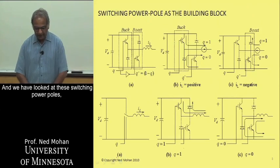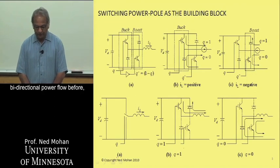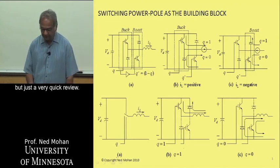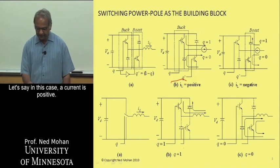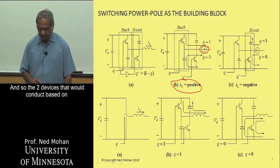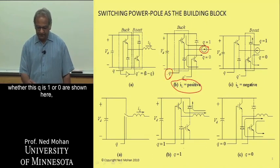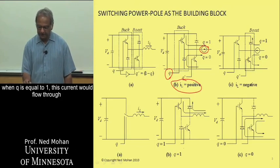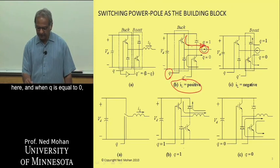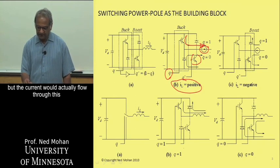We have looked at these switching power poles with bidirectional power flow before, but this is just a very quick review. So let's say that in this case the current is positive — that is, it's flowing in this direction over here. And so the two devices that would conduct based on whether Q is 1 or 0 are shown here. When Q is equal to 1, this current would flow through here. And when Q is equal to 0, even though this transistor is gated on, the current would actually flow through this diode over here.